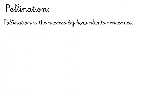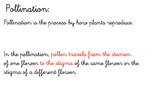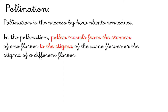Pollination. Pollination is the process by which plants reproduce. In pollination, pollen has to travel from the stamen of one flower to the stigma of the same flower or to the stigma of a different flower.